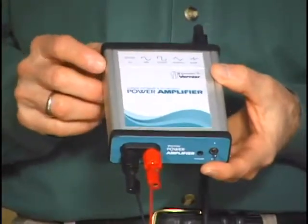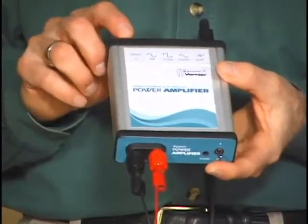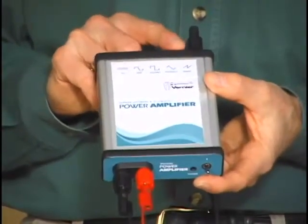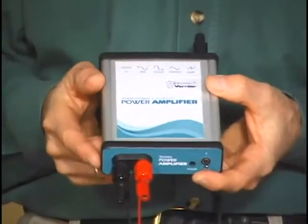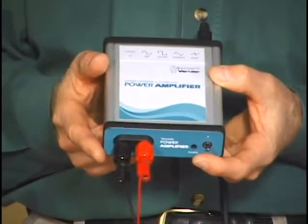This can produce an output of minus 10 to plus 10 volts and it can produce a DC signal, it can produce a sine wave, a square wave, a triangle wave or a ramp function. The frequency range is a quarter of a hertz to 10,000 hertz, so lots of possibilities there.